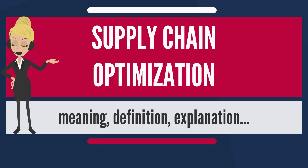Whilst most software vendors are offering supply chain optimization as a packaged solution and integrated software, some vendors are running the software on behalf of their clients as application service providers. The techniques being applied to supply chain optimization are claimed to be academically credible. Most of the specialist companies have been created as a result of research projects in academic institutions or consulting firms, and they point to research articles, white papers, academic advisors and industry reviews to support their credibility.